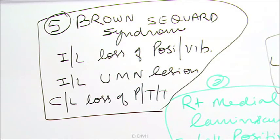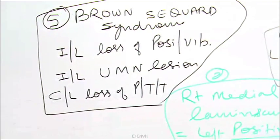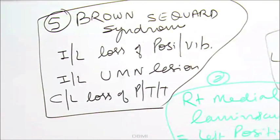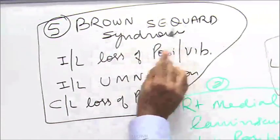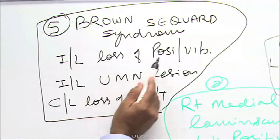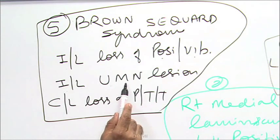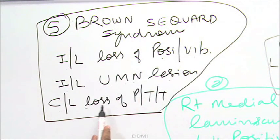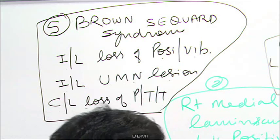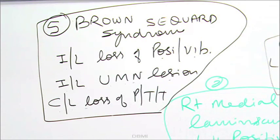So this is what we learn about the spinal cord. Repeat after me: in Brown-Séquard syndrome, number one — ipsilateral loss, ipsilateral and contralateral loss. This is Brown-Séquard syndrome.